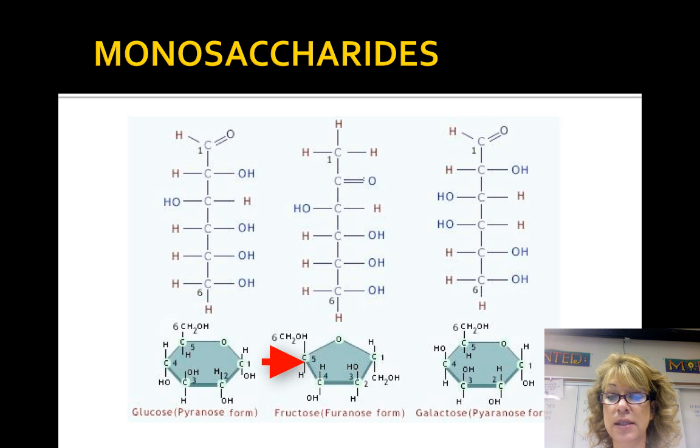Fructose is also C6H12O6, like glucose, but the carbonyl group is in a different place than glucose. Therefore, fructose and glucose are isomers. The difference between them actually makes fructose sweeter.